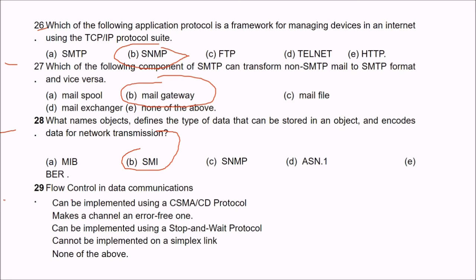Question 29: flow control in data communications can be implemented using CSMA/CD protocol, makes a channel error-free, can be implemented using stop-and-wait protocol, or can be implemented on a simplex link. The answer is C — flow control can be implemented using a stop-and-wait protocol.